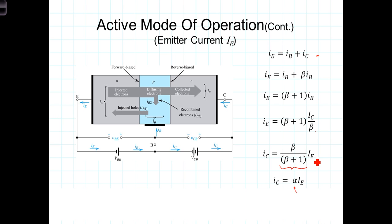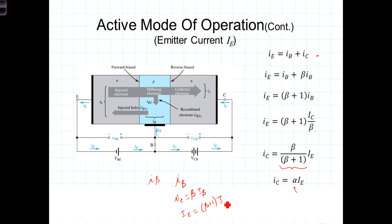To summarize: I_B is the smallest of the three currents. I_C = beta * I_B, so the collector current is significantly larger than the base current. I_E is slightly larger than I_C and significantly larger than I_B. All of these relationships apply only during the active mode of operation.